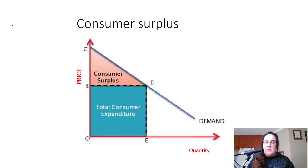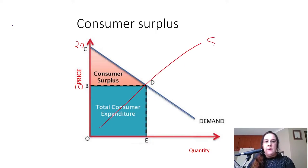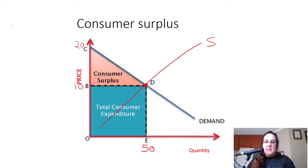Let's look at the graph for consumer surplus. Consumer surplus is the difference between the maximum price a consumer was willing to pay and the actual price they ended up paying. Let's make the maximum price they are willing to pay $20, and the equilibrium price — the actual price they ended up paying — $10. Remember, equilibrium is found at the intersection between the supply and demand curves. So the equilibrium price is $10 and equilibrium quantity is 50.